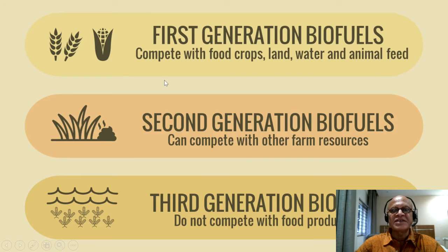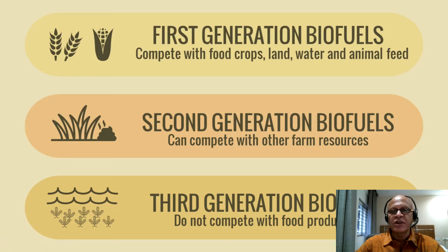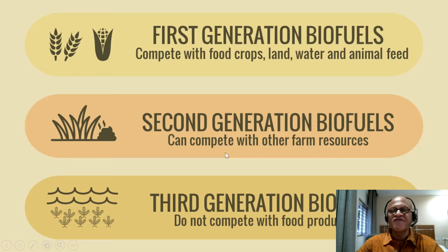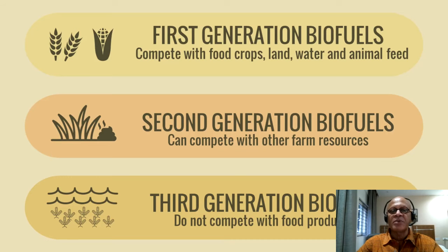Here is an example. First-generation biofuels compete with food crops, land, water, and animal feed — I will show what these are in the next slide. Second-generation biofuels can compete with other farm resources. And third-generation biofuels, we want to make sure that they do not compete with food production at all.